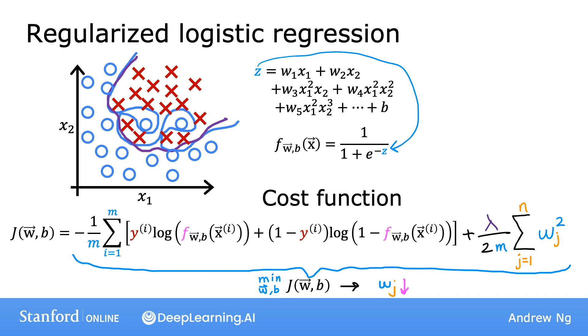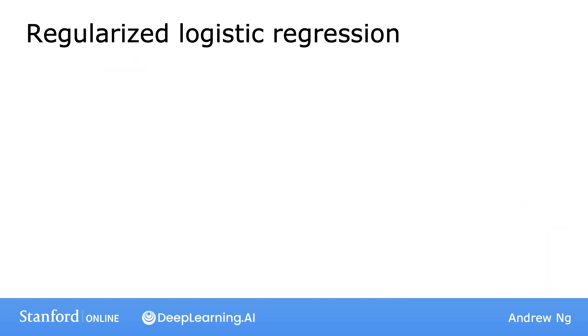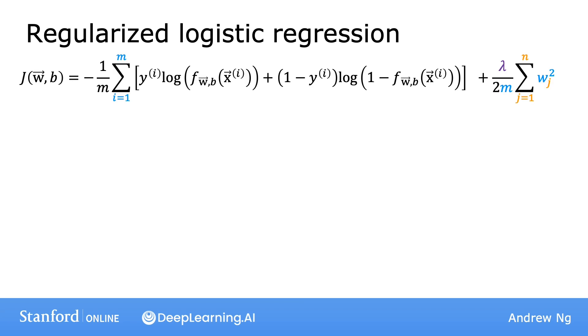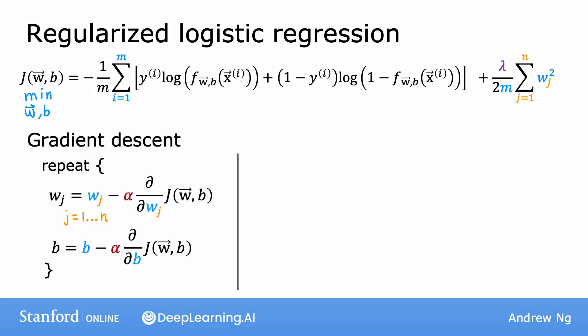So when using regularization, even when you have a lot of features, how can you actually implement this? How can you actually minimize this cost function J(w,b) that includes the regularization term? Well, let's use gradient descent as before. Here's the cost function that you want to minimize. To implement gradient descent, as before, we'll carry out simultaneous updates over wj and b.